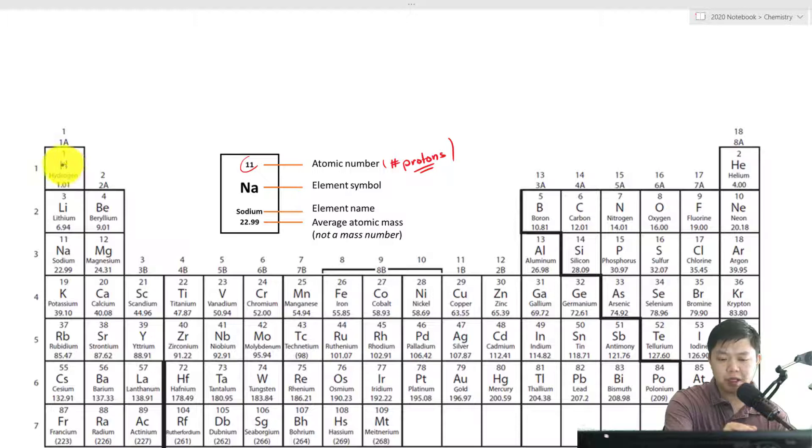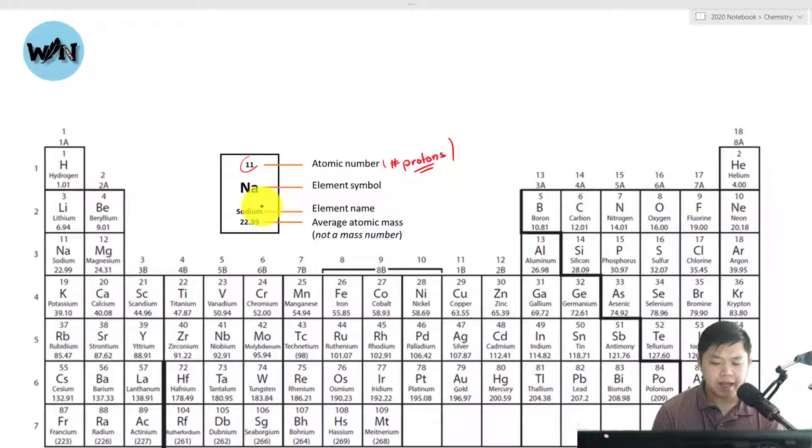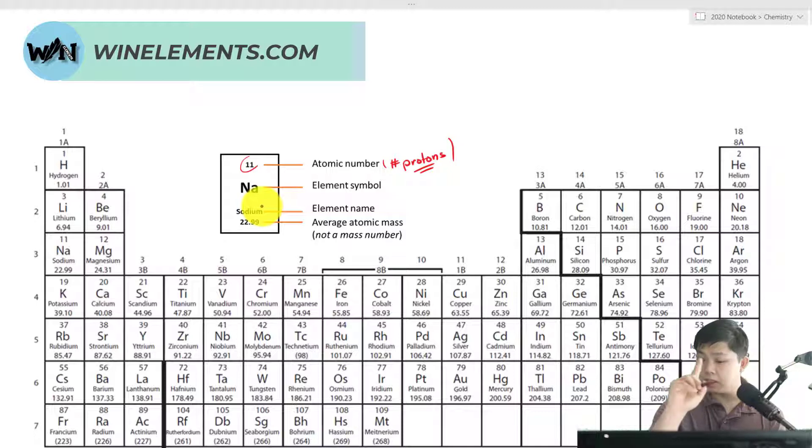As you notice, the periodic table is arranged based on increasing atomic number. Right below, we have the element symbol, and then, if we're lucky, we have the element name. Lastly, we have the average atomic mass. Now, this is not the same thing as mass number.